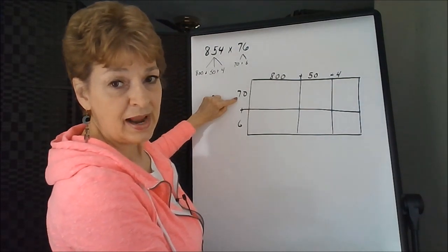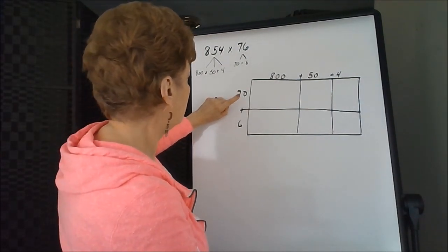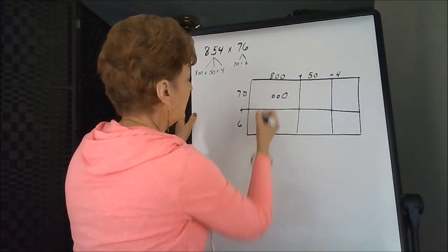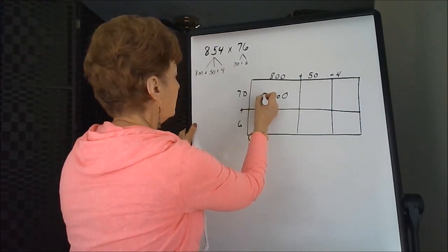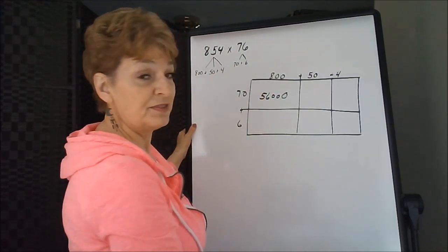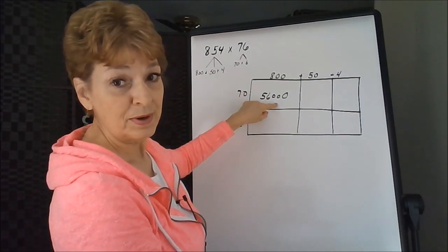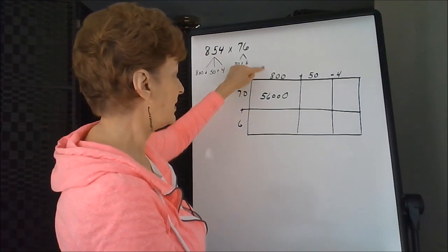Now we're going to actually start our partial products paying attention to the zeros. There's a zero in the 70 and two zeros in the 800. 7 times 8 is 56. It's actually 56,000, but we memorialized the zeros and then just multiplied the 8 times the 7.